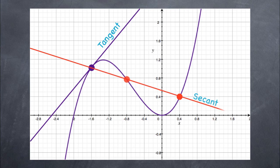Think of the tangent line in contrast to a secant line which runs through the graph at one or more points.